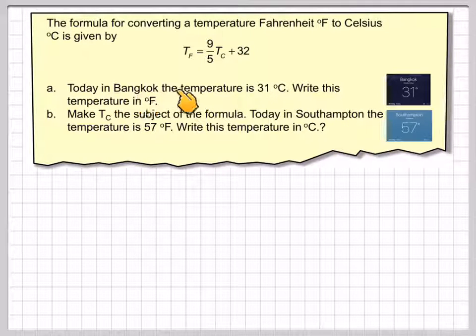Today in Bangkok the temperature is 31 degrees. Write this in degrees Fahrenheit. Make Tc the subject of this formula. And today in Southampton the temperature was 57 degrees Fahrenheit. What was the temperature in degrees Celsius?